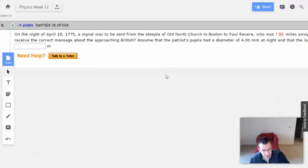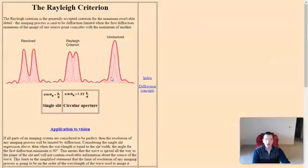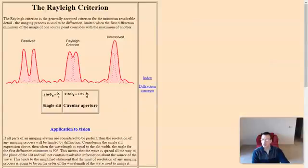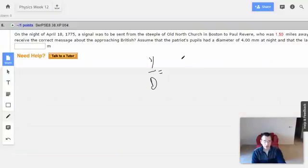Alright, so this is the same idea as the Raleigh criterion. So we have sine of theta, which is y over d, equals 1.22 lambda over d. And we're looking for the distance between the two, so I'm going to move the distance over there.